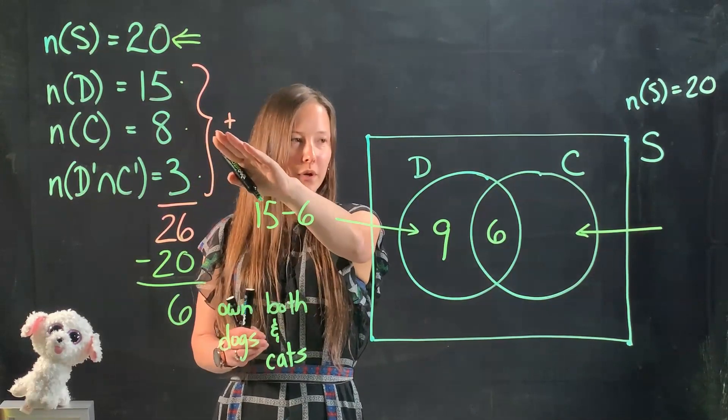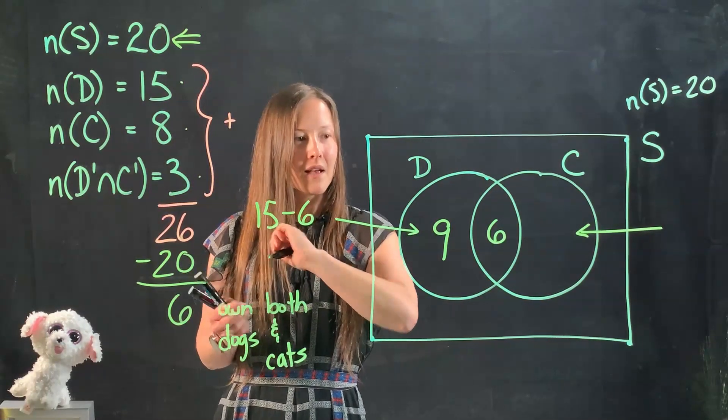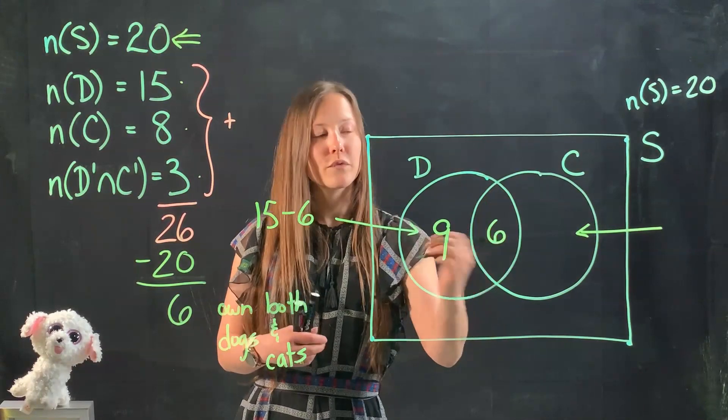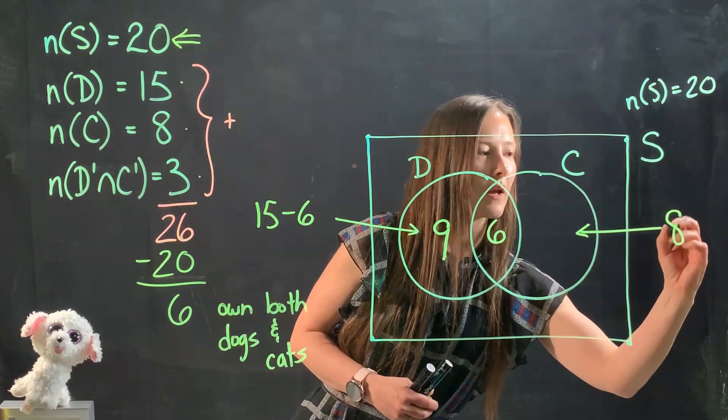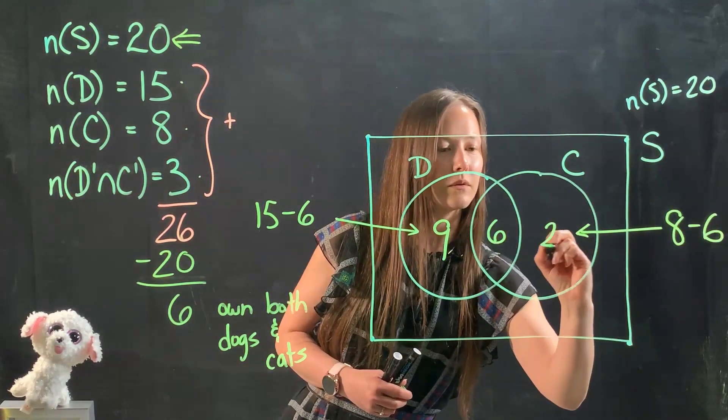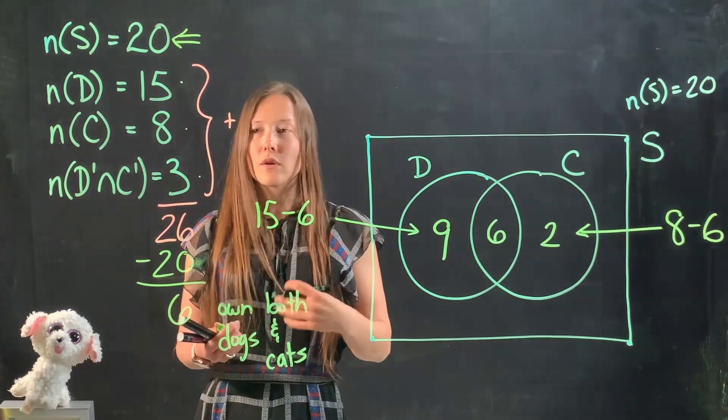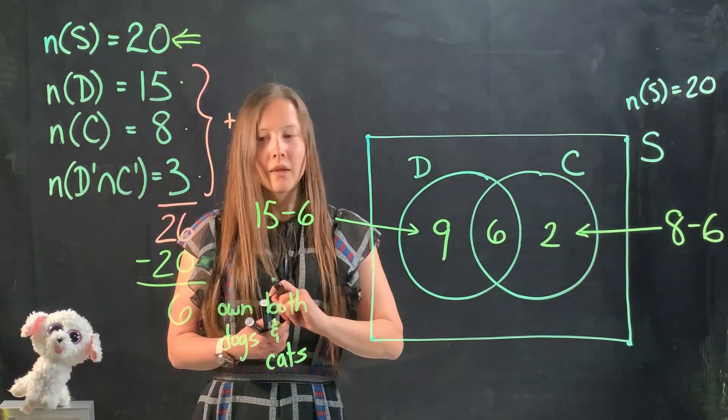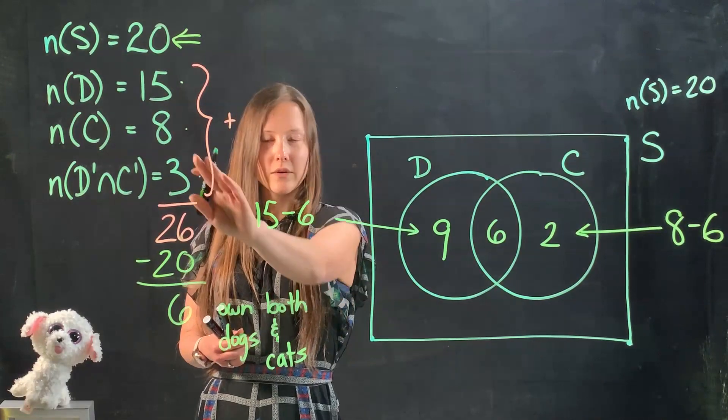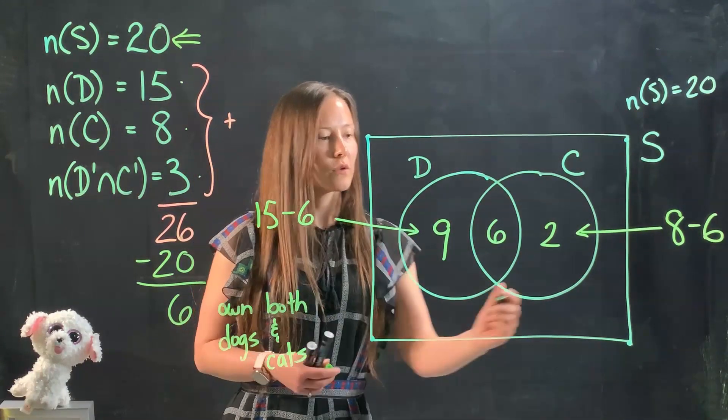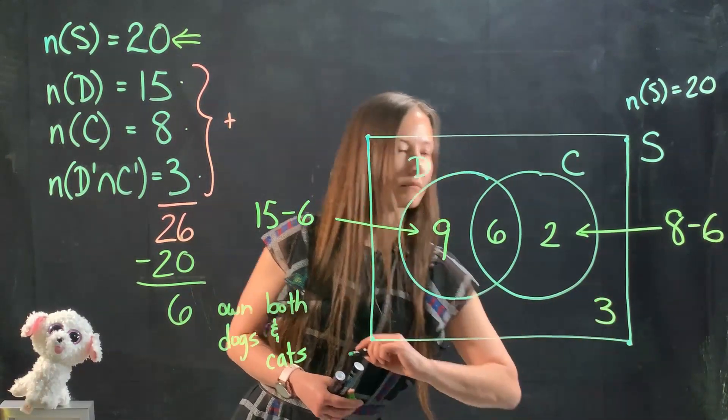Let's go over to cats. So going back to our data over here, we have 8 people who say they own cats, but 6 have already been accounted for in the middle. So we're gonna go 8 minus 6 to get the 2 that own cats only. The last thing we need to take into account is the 3 who own neither dogs nor cats. That's gonna go in the outer region.